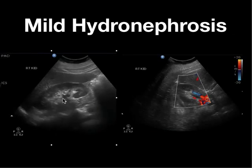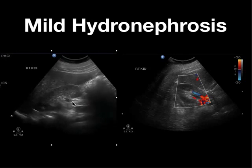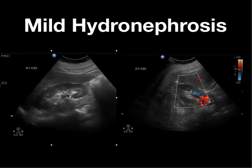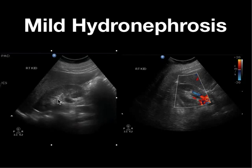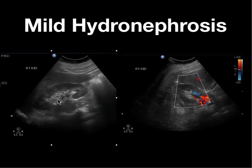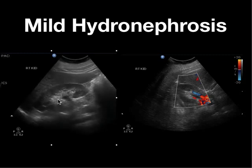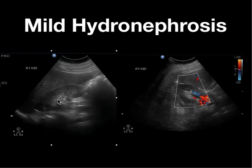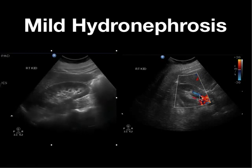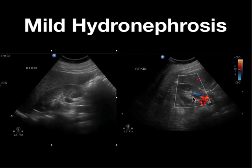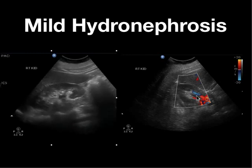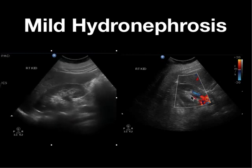Here's a patient with mild hydronephrosis — there's some dilatation of the pelvis extending into the proximal ureter, but no extension into the minor calyces. When I see mild hydronephrosis, a key differential is whether this is truly hydronephrosis or a prominent renal vessel. I will add color Doppler to verify. Here's a transverse view of the right kidney — you can see a vessel here, but this is the mild hydronephrosis.